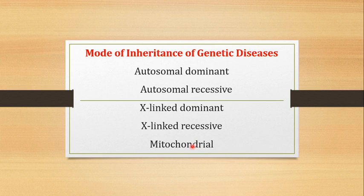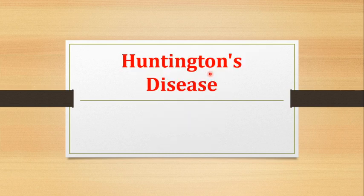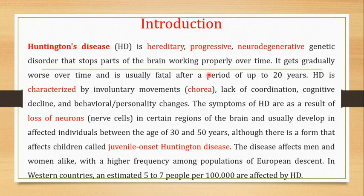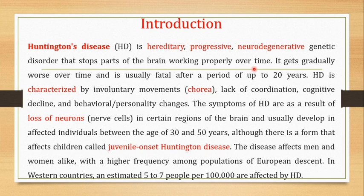In this video I'll be focusing on an example of autosomal dominant genetic diseases, and that particular disease is known as Huntington's disease. The Huntington's disease, usually abbreviated as HD — I'll be using this term HD throughout this video. HD is a hereditary progressive neurodegenerative genetic disorder that stops part of the brain working properly over time, gets gradually worse, and is usually fatal after a period of up to 20 years.